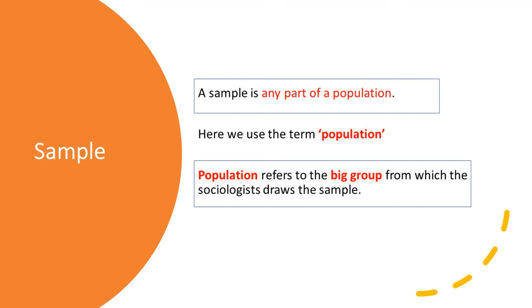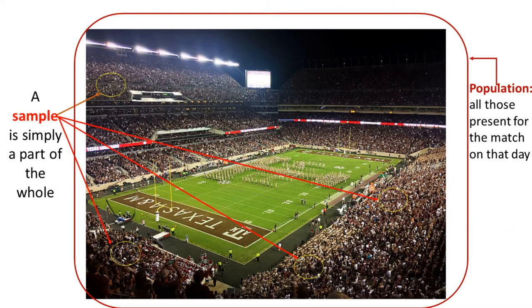We also use the term population. You should remember that we are not referring to the population of a country. In sampling, population refers to the bigger group from which the sociologist is drawing the sample. Let's go back to the same example of the stadium. In this case, the population is all those present for the match on that day. We are not referring to the population of the country.